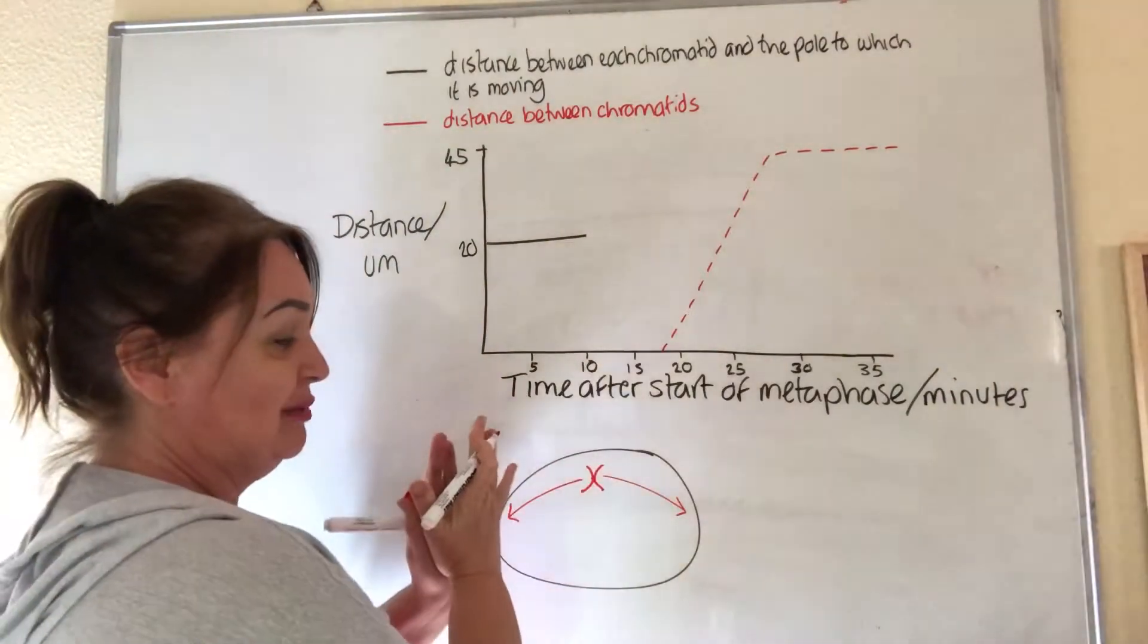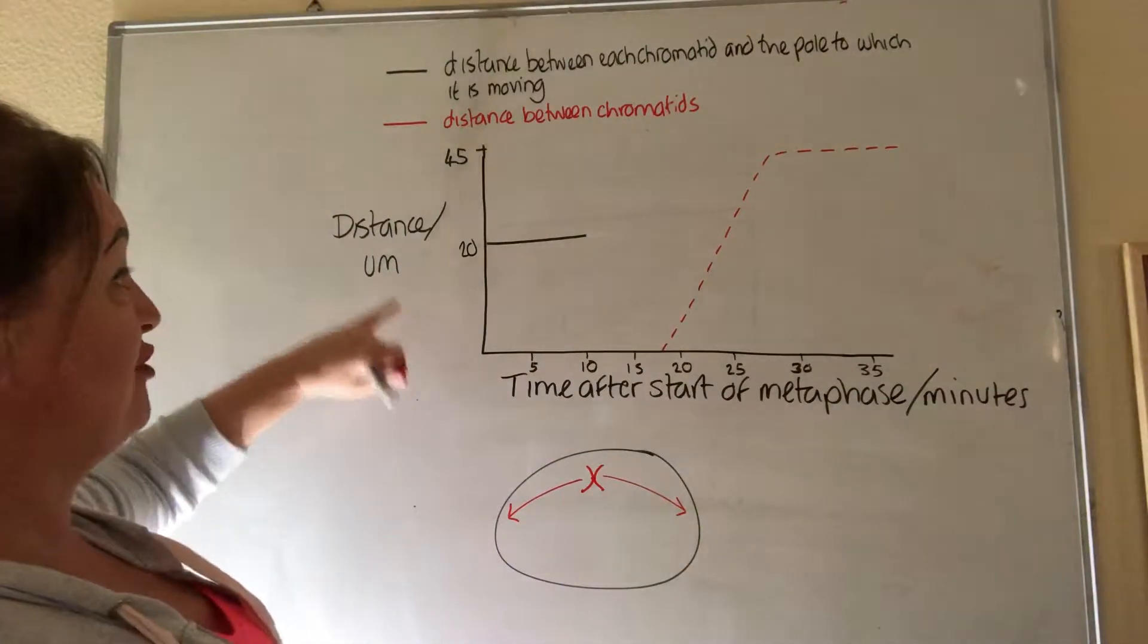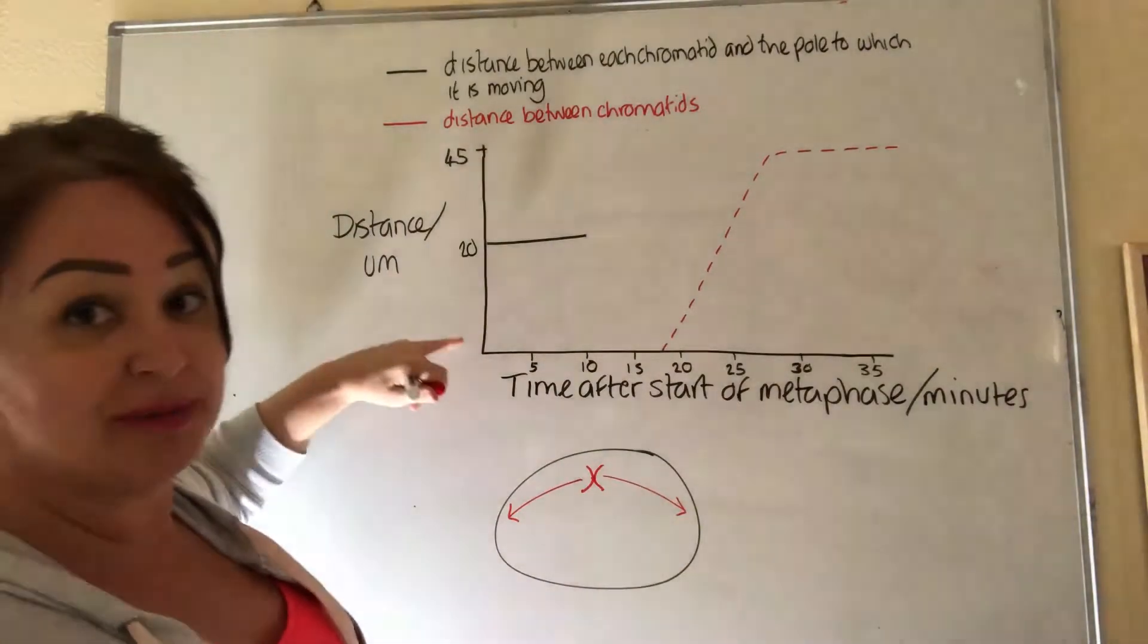The chromatids are going to be pulled apart. If we look at the graph, we've got the distance in micrometers. That's fine.